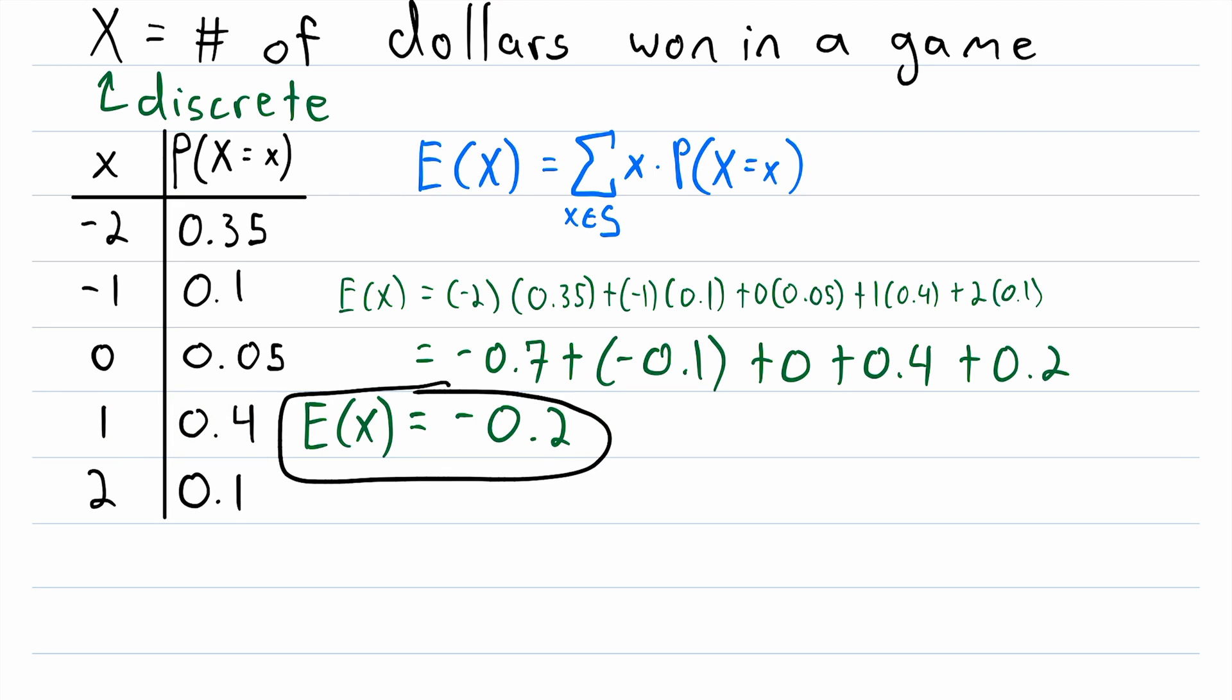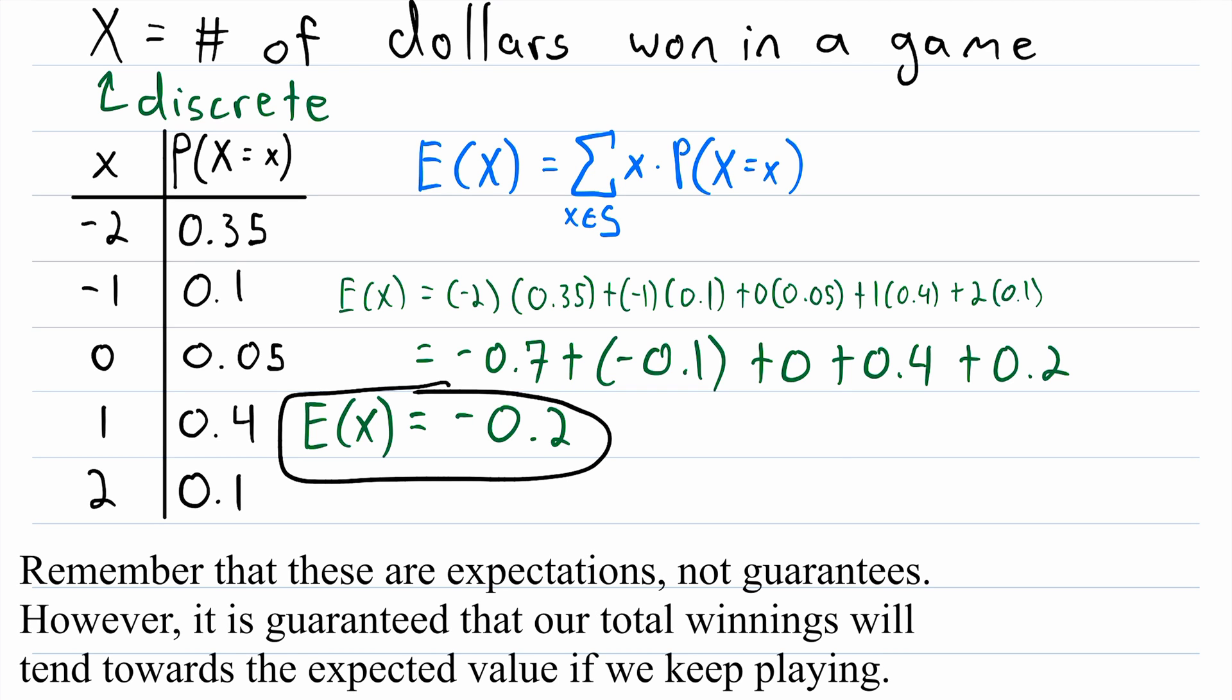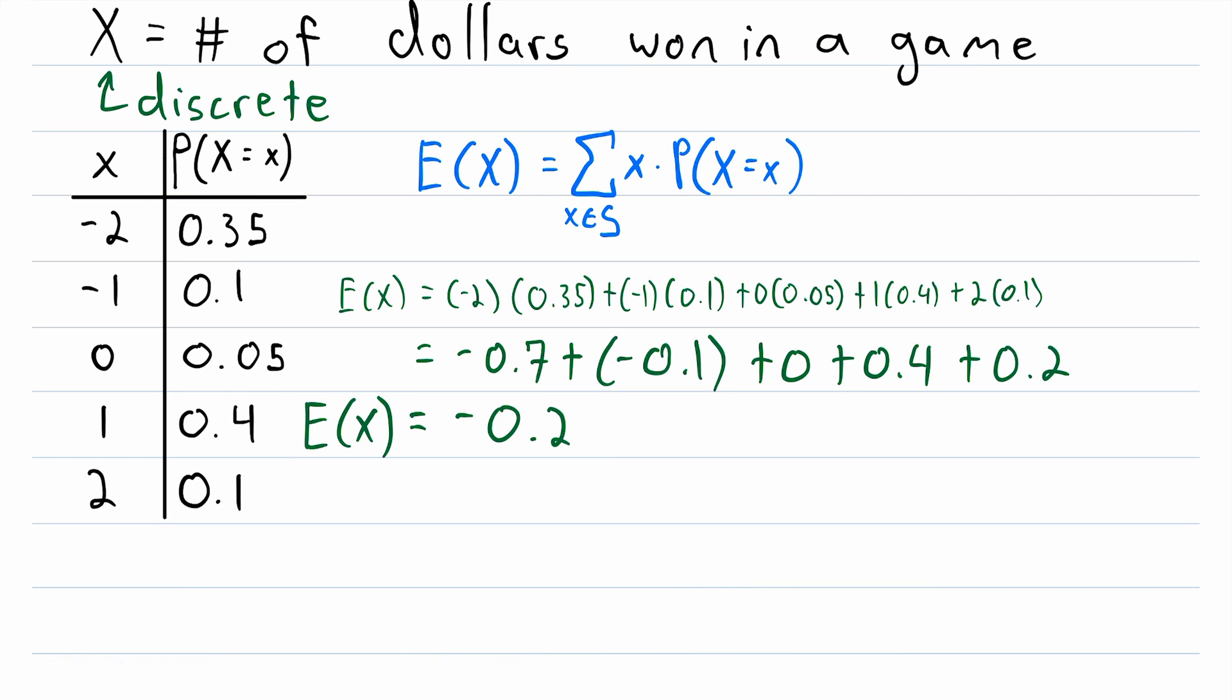But this expected value of negative 0.2 tells us that if we were to say play the game 10 times, we would expect to come out losing $2. Or if we played it 100 times, we would expect to come out having lost $20.